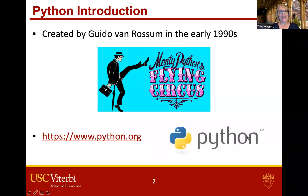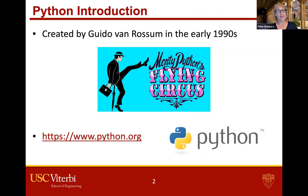Python was created by Guido van Rossum, a Dutch programmer in the early 1990s. He named it after Monty Python's Flying Circus. Monty Python is a British comedy troupe.